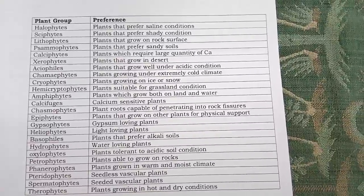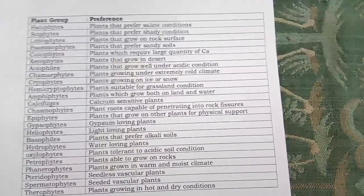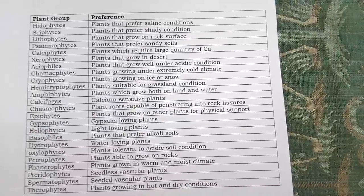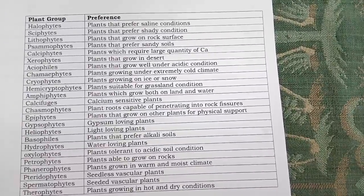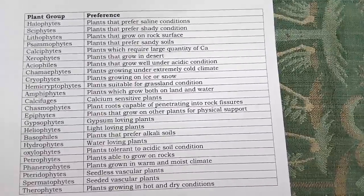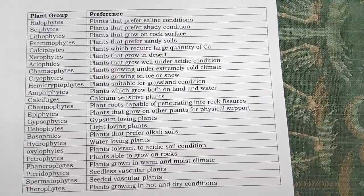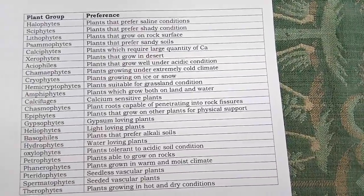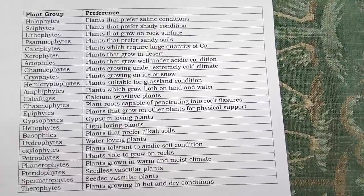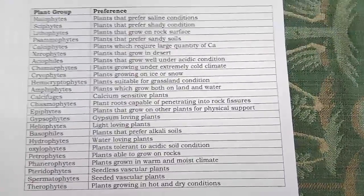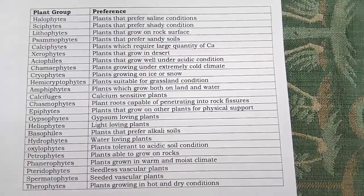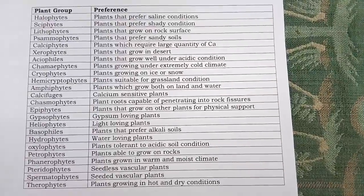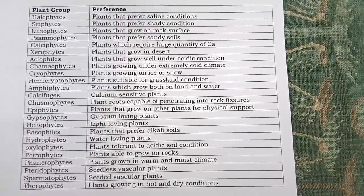Hello friends, welcome to Agriculture Tutorials. Today I am discussing plant groups and their preferences. Halophytes are plants that prefer saline conditions. Psammophytes prefer sandy conditions. Lithophytes grow on rock surfaces. Samophytes grow in sandy soils. Calciphiles are plants loving large amounts of calcium.